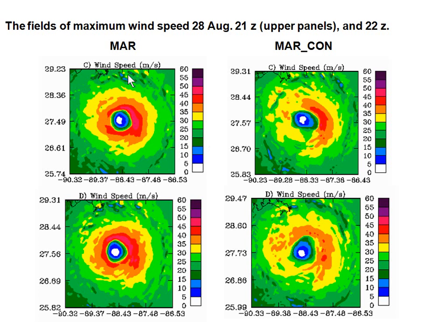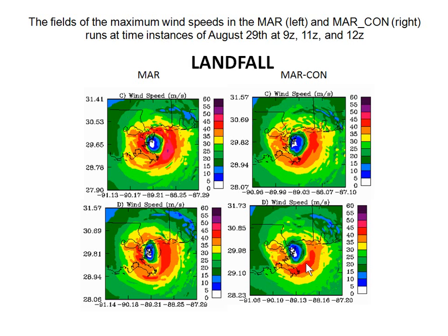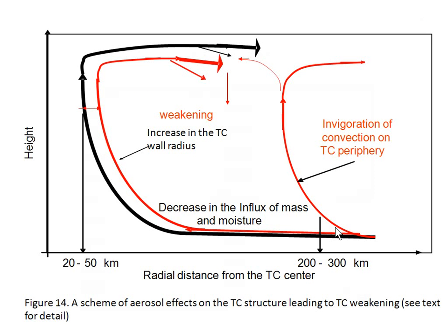That figure was related to when the tropical cyclone was comparatively far from the coastline, but the same feature remains when the tropical cyclone makes landfall. At the time instance of landfall, comparing maritime-only aerosol concentration with the case where continental aerosol effects are taken into account, aerosol clearly leads to weakening of the tropical cyclone.